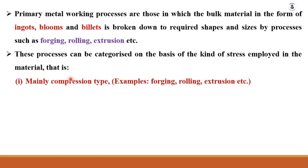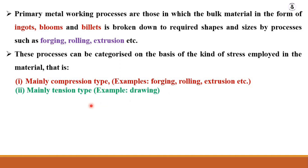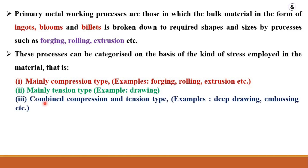These processes can be categorized on the basis of which kind of stress is being employed to convert ingots, blooms, and billets into desired shape and size. Mainly the stress is considered as compression type — basic examples being forging, rolling, and extrusion. Secondly, the tension type of stress is used in the drawing process. And if you are using both compression as well as tension, that is the third category — combined compression and tension — which includes deep drawing and embossing.